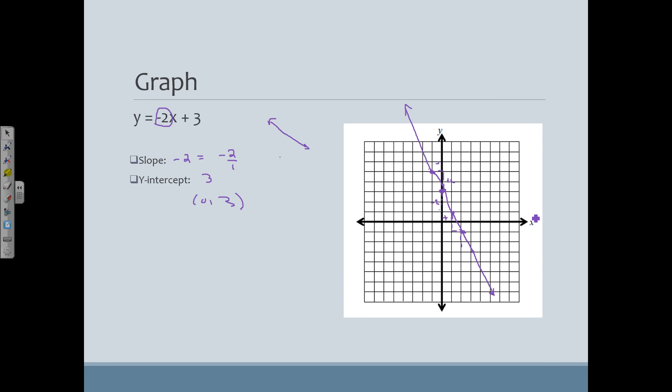But it works. So there is my graph, y equals negative 2x plus 3. Notice that I've connected the dots and extended the line in both directions. If you do not have that arrow, I would mark it wrong, because it would be a line segment, not a line.